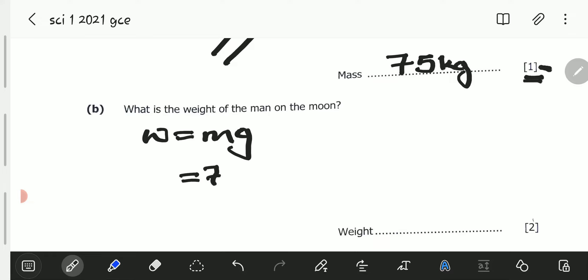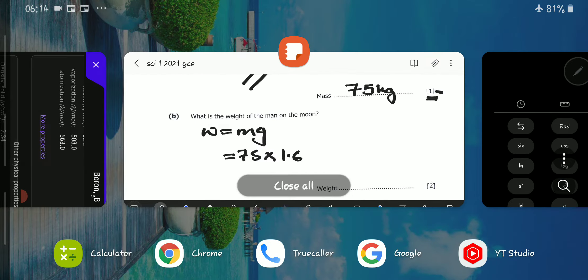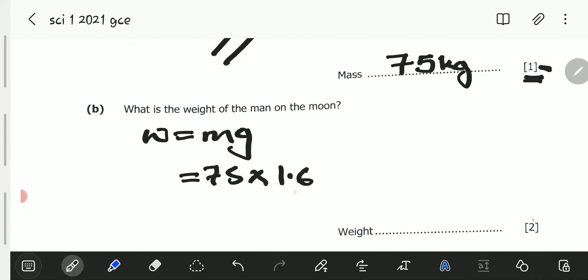So, this is going to be 75 multiplied by 1.6. 75 multiplied by 1.6 is 120. So, this will be equal to 120. 120 what? Weight is a force, so it will be a Newton. So, weight is equal to 120 Newton.